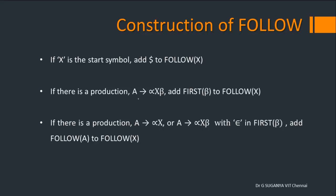Now let's look at the formal rules. Rule 1: if X is the start symbol, add dollar to FOLLOW of X. Rule 2: if there is a production A gives α X β, what follows X is β — add FIRST of β to FOLLOW of X. Rule 3: if β goes epsilon, or if FIRST of β contains epsilon, go to the parent (the non-terminal on the left) and add its FOLLOW to FOLLOW of X.